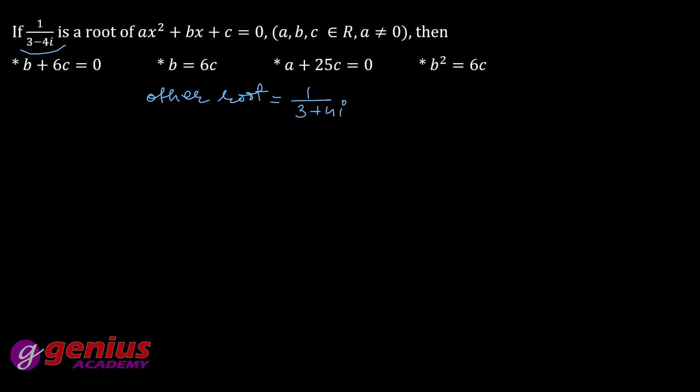We know that alpha plus beta sum of roots, to mere paas 3 minus 4 or doosra hai plus 3 plus 4 iota. Which is equal to minus b by a. Isko kar lete 3 plus 4 iota, 3 minus 4 iota, niche a square minus b square, a square minus b square.